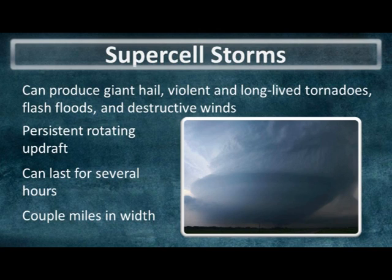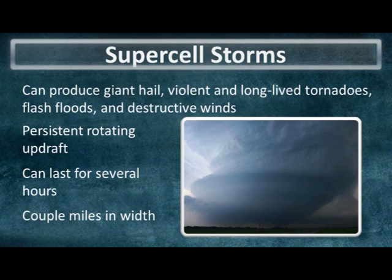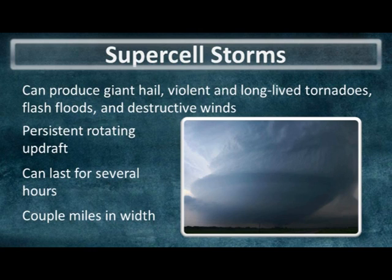Last but certainly not least, our supercell thunderstorms. Unlike the other storm classifications, what makes these different is that their updraft has persistent rotation. Because of that rotation, these storms are notorious for producing tornadoes — in fact, all violent and long-lived tornadoes have been from supercells. Unlike squall lines that can extend up to several hundred miles, supercells compact their energy into a small area, usually a couple miles in width, but because they're pulling in so much energy over a small area, they're very significant for producing destructive weather. We'll learn more about supercell storms in greater detail in the following module.